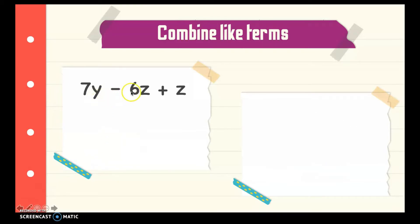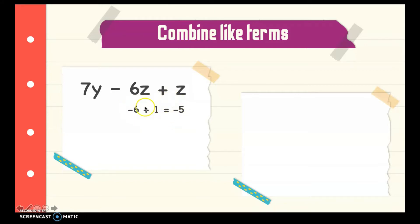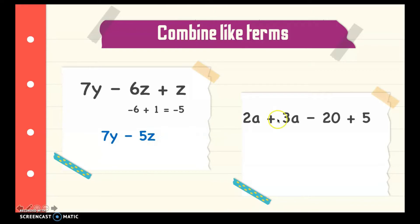Next: 7y minus 6z plus z. We can combine the z's, but we cannot combine the y. When we combine, this is negative 6 plus 1 — we include the subtraction sign as negative 6, plus the coefficient of z which is 1. Adding unlike signs, we subtract and copy the sign of the greater absolute value: negative 6 plus 1 is negative 5. So our answer is 7y minus 5z.